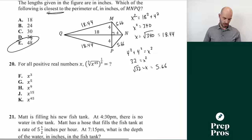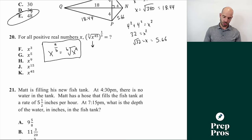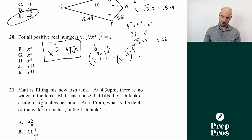Number twenty involves fractional exponent rules. Know that x to the (a/b) equals the b-th root of x to the a. Here we can rewrite the expression as x to the (45/3) to the (1/3). Since 45/3 equals 15, we have x to the 15th, to the (1/3). When raising a power to a power, multiply exponents: 15 times 1/3 equals 5. The answer is G — just x to the fifth.